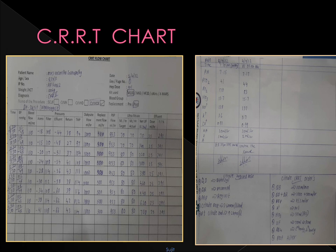We monitor all events occurring in CRRT using a flow chart which records BP, blood flow rate in ml per minute (here around 110), and various pressures: access pressure around minus 18 to 38, filter pressure around 180 to 118, effluent pressure ranging minus 44 to minus 62, return pressure, and transmembrane pressure — which increases when there is clotting. Dialysate flow is 1000 ml per hour, replacement fluid at 500 ml per hour, pre-blood flow rate less than 1000 ml per hour, ultrafiltration removal, and effluent dose are also recorded. An ABG is done to monitor the clinical situation, noted on the back of the flow chart.